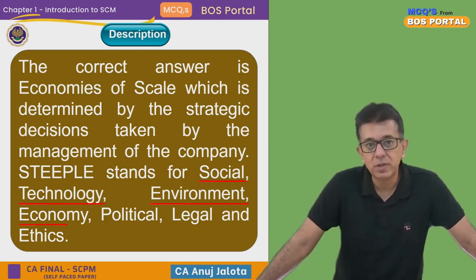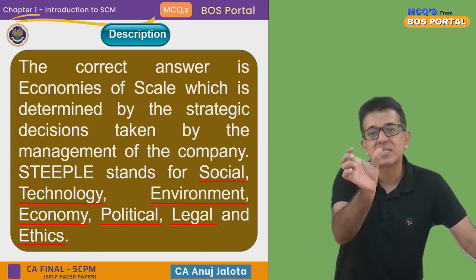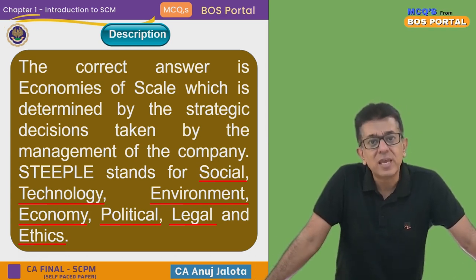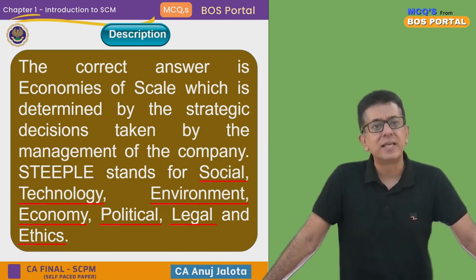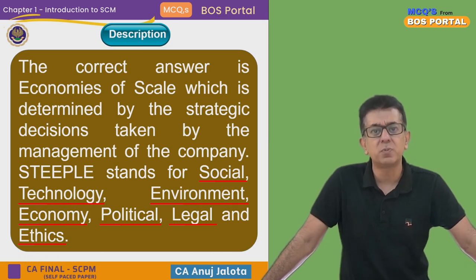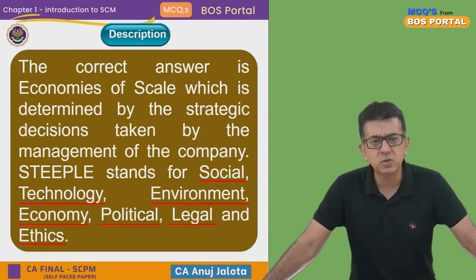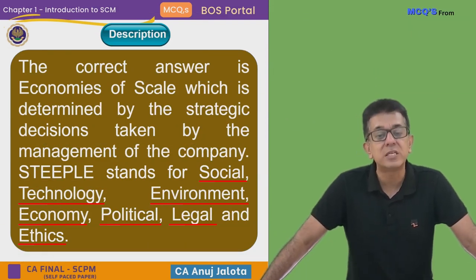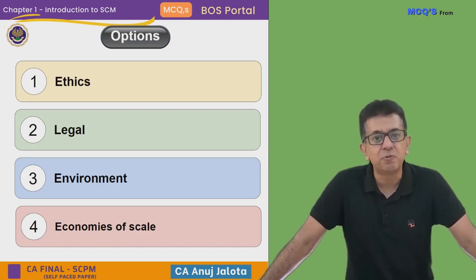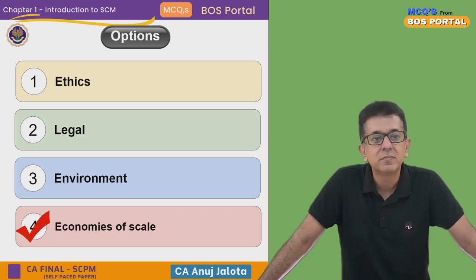So the business gets affected by all those factors. Economies of scale is NOT covered in the STEEPLE framework because it is not part of the external environment — it is based on internal decisions taken by the management of the company. Therefore, economies of scale does not come under STEEPLE at all, and the correct answer is option four: economies of scale.